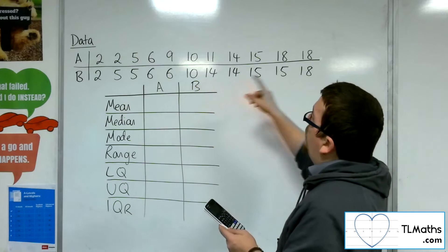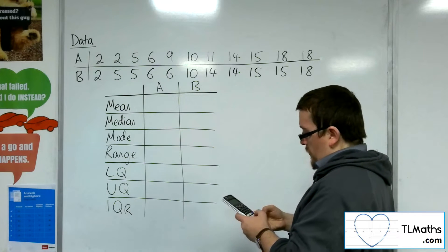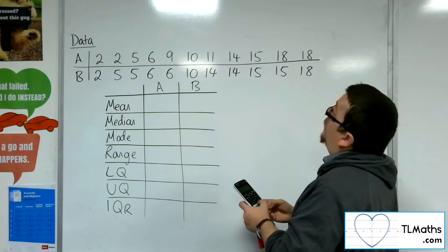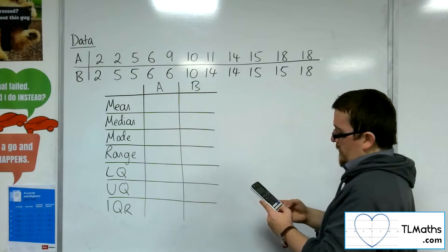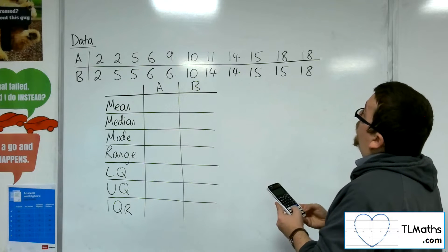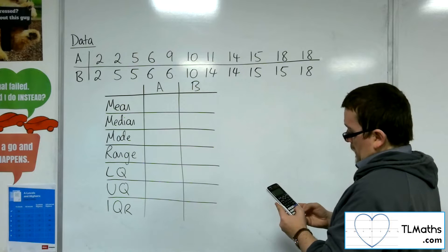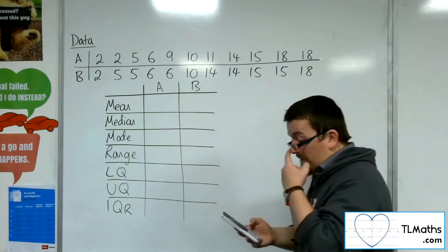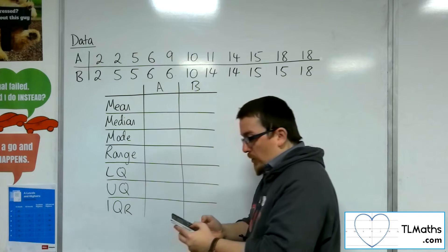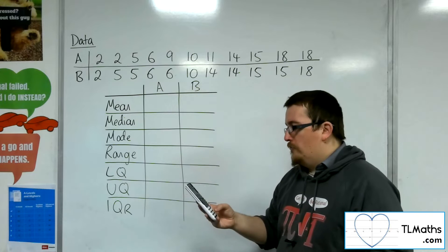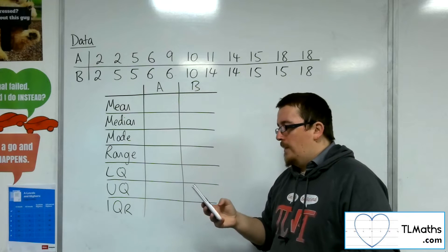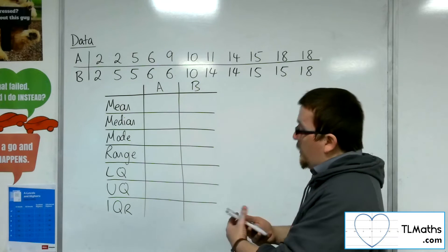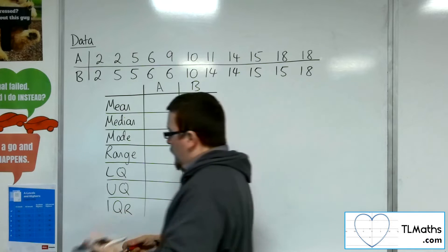You're going to want to type in those numbers: 2, 2, 5, 6, 9, 10, 11, 14, 15, 18, and 18. Then you can press option and then number three — one variable calc — and it gives you all the information that you actually need.